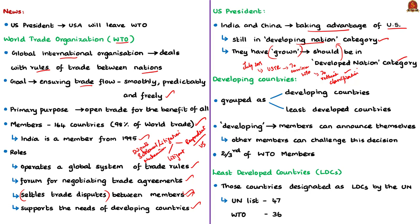Developing countries in the WTO comprise a majority of its membership. They are grouped as developing countries and least developed countries based on different criteria. Actually, there are no WTO definitions of what constitutes a developed or developing country — WTO members can announce themselves whether they are a developed or developing country. So developing countries in the WTO are designated on the basis of self-selection.